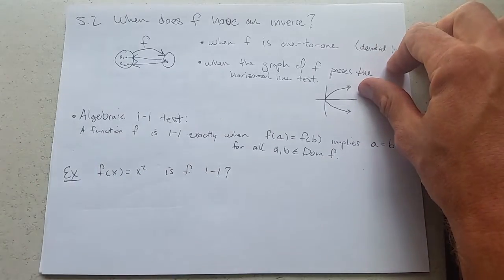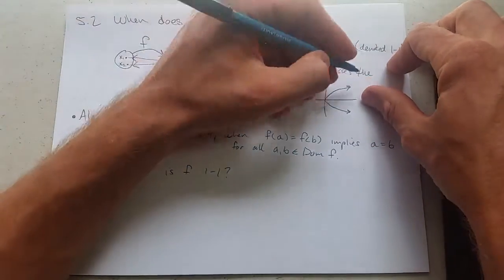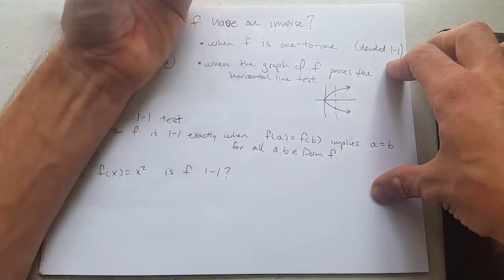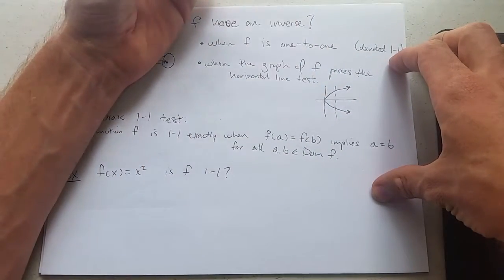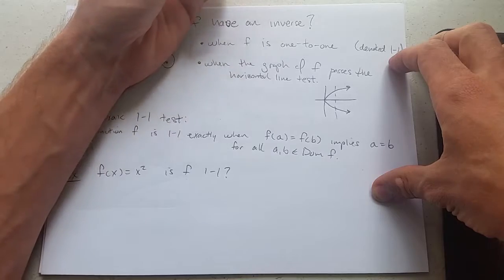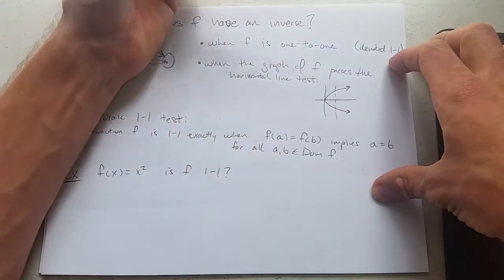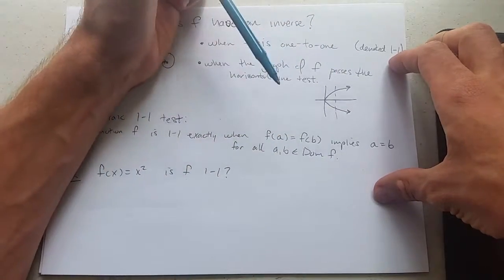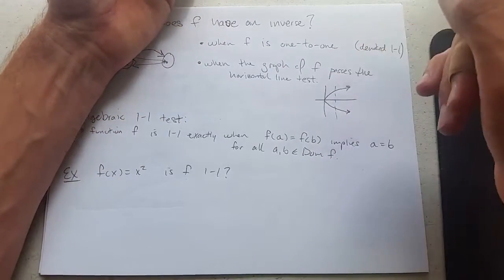This function - this is the graph of an equation that is not a function. This would fail the vertical line test. So you want to be careful: if your function is going to be invertible, you'll pass both the horizontal and the vertical line test.